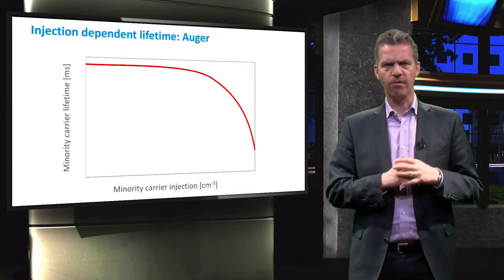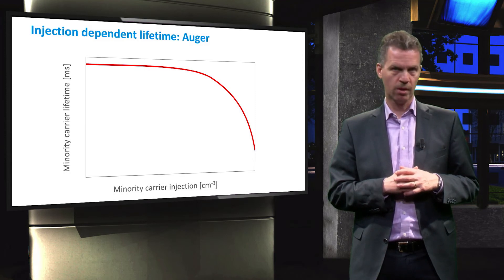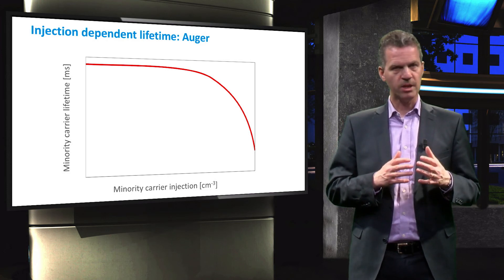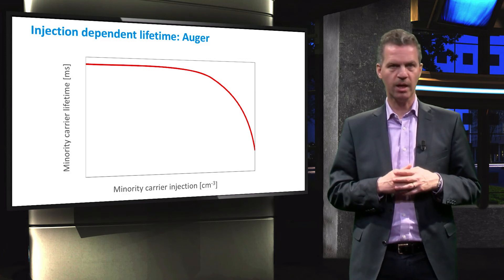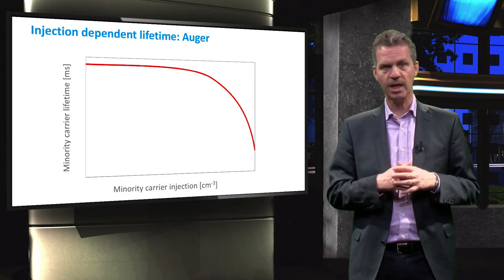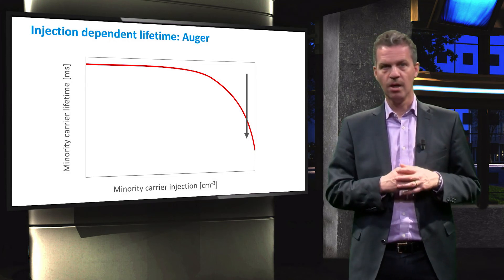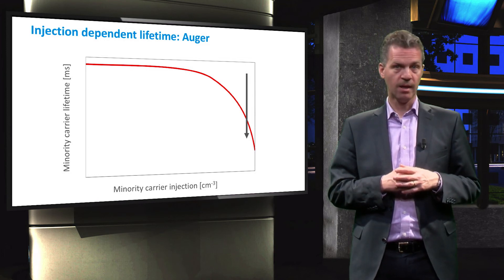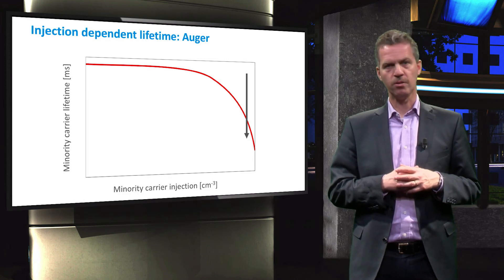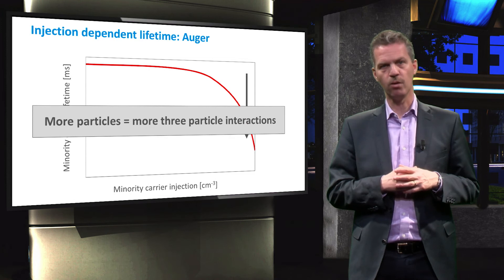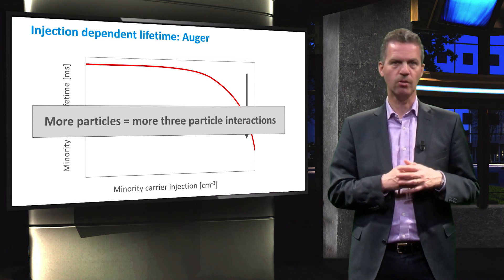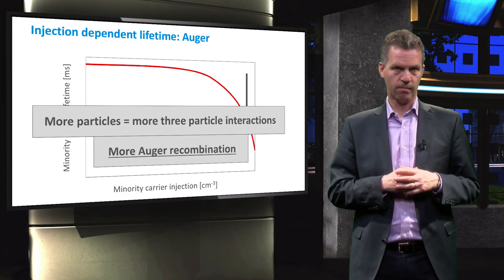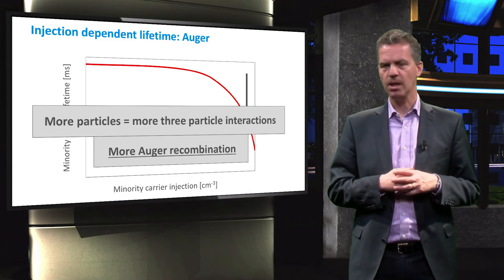When plotting the total lifetime as a function of injection level in a double logarithmic plot, we obtain the following graph. Obviously, at low minority carrier concentration the lifetime is constant, as at this injection level the lifetime is dominated by SRH or surface recombination, which does not depend on the injection level. However, for high injection levels the lifetime drops rapidly, as in that range Auger recombination dominates. We can explain this by the fact that at higher carrier concentrations more particles are in each other's vicinity, which increases the probability for three-particle interactions like Auger recombination. So at high injection level, Auger recombination is dominant and reduces the lifetime. This is an important conclusion and is a property of any semiconductor.